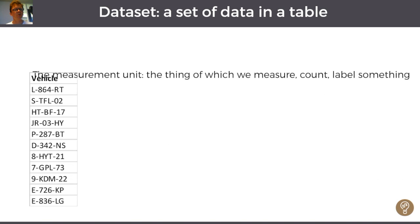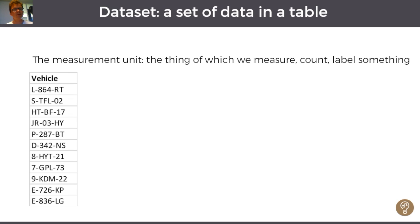In the first column you put the measurement unit, the things of which you measure, count, label or something. In this case it's a vehicle, but it could be anything, like a product, a customer, or an order.